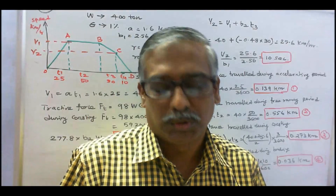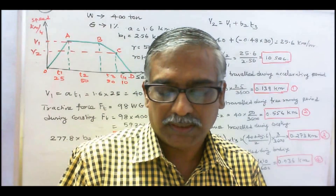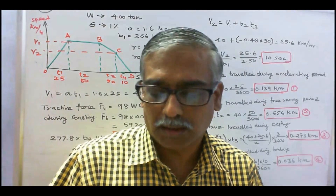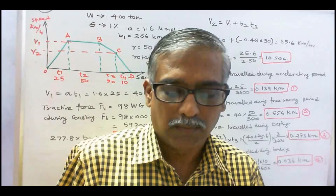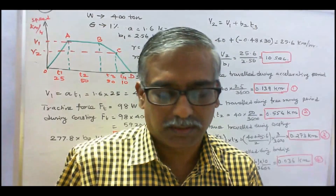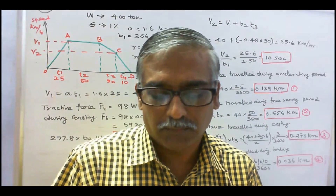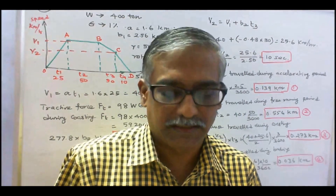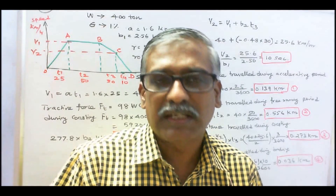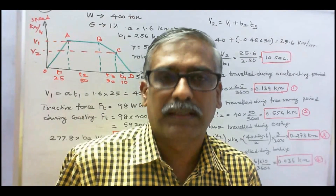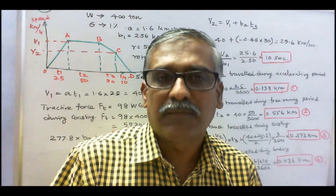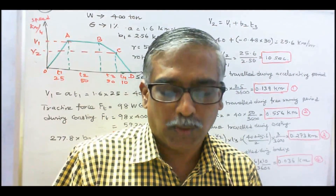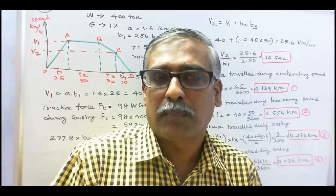Problem 2: A 400-ton electric train runs up an ascending gradient of 1% with the following speed-time curve: (1) uniform acceleration of 1.6 km per hour per second for 25 seconds, (2) constant speed for 50 seconds, (3) coasting for 30 seconds, (4) braking at 2.56 km per hour per second to rest.